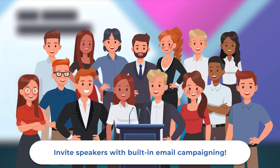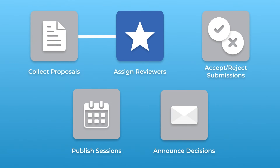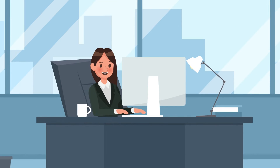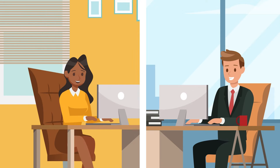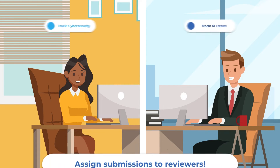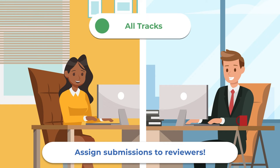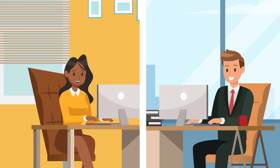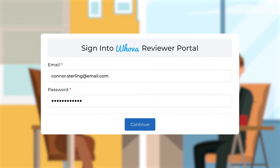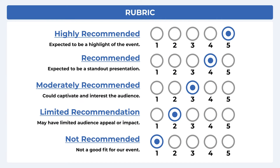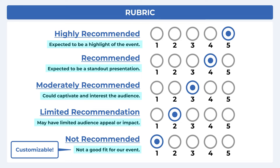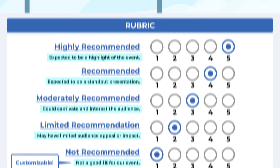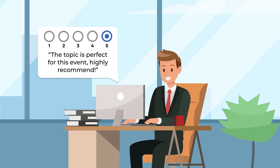We also support organizers to invite external reviewers and assign reviews based on their expertise. Organizers can invite internal and external reviewers and organize the best workflow for their team by assigning reviewers based on tracks, or allowing everyone to give their opinion on any submission. To keep your call for speakers process secure, reviewers log into a dedicated review portal to view and comment on submissions. Set a rubric for reviewers to follow, with the ability to customize the meaning of each score, so you can uphold a consistent standard for your event.